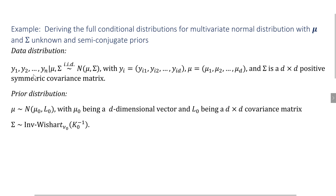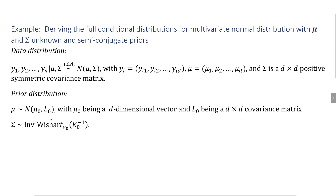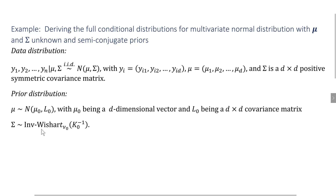In this example, we assume we have n observations that are independent and identically distributed d-dimensional multivariate normals with mean mu and covariance matrix sigma. The prior distribution of mu is also a d-dimensional multivariate normal with mean mu-naught and covariance matrix L-naught. Lastly, we assume that sigma has an inverse Wishart distribution with nu-naught degrees of freedom and scale matrix K-naught.